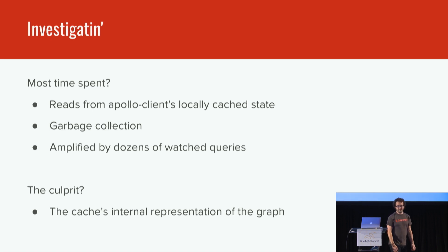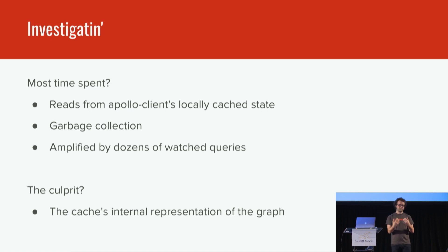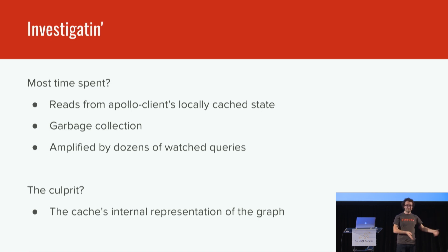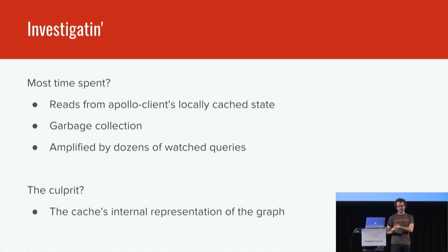So we dug into it, and a lot of it turned out to be time spent reading from the Apollo cache. We started to profile this. We were observing that a query would come back from the server, it would write it to the cache — to Apollo's internal representation of that query — and then we would see the vast majority of time spent past that just reading the data out of the cache to provide it to our components or to our background services. Digging into that further, the garbage collector was firing all the time, so there's a bunch of objects being created. And because we had all these query observers, we noticed they were a large source of this.